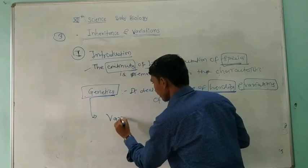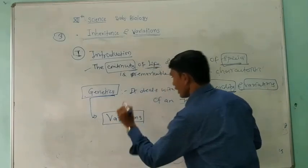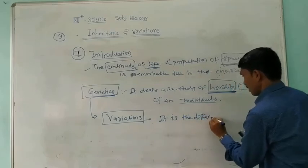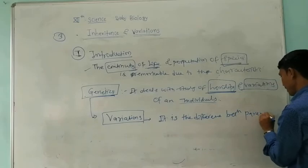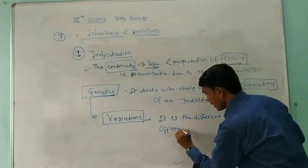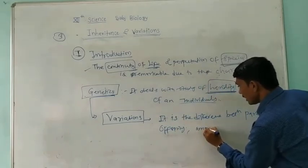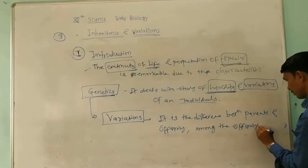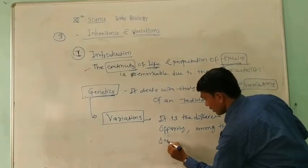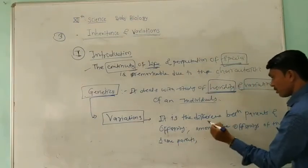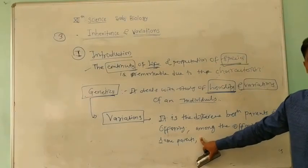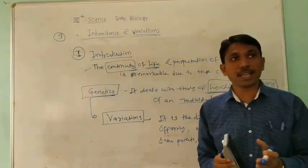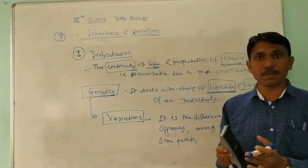Variation is the difference between parents and offspring, and among offspring of the same parents, and among individuals of the same species. That is called Variation. Variations play an important role in evolution — you know the example of monkey to modern man, that is an example of evolution.